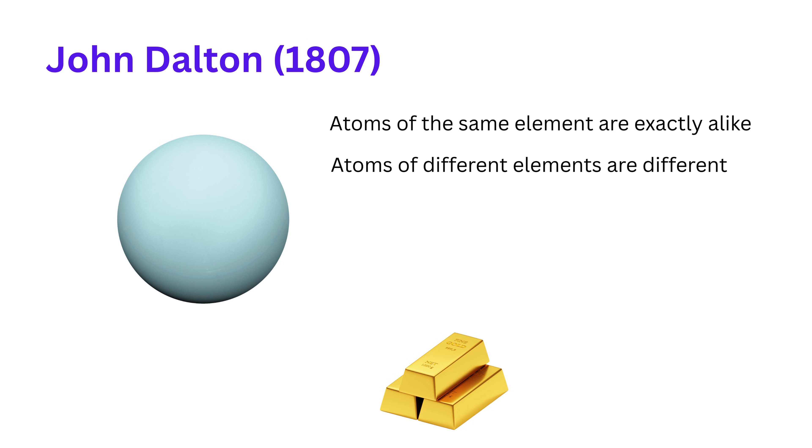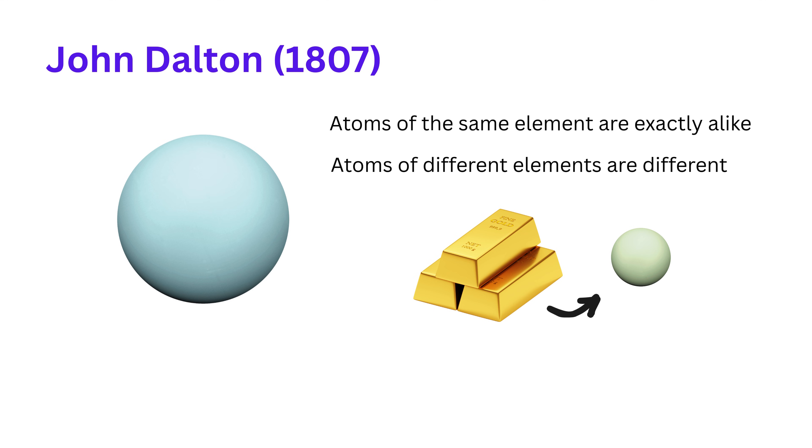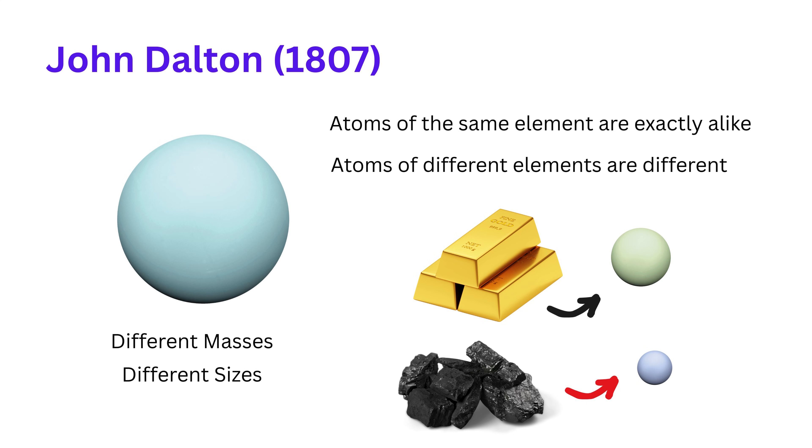For example, a pure sample of gold from a riverbed in California would have atoms with the exact same mass and chemical properties as a pure sample of gold from a mine in South Africa. Conversely, a gold atom is distinctly different from a carbon atom. They have different masses, different sizes, and different chemical properties.